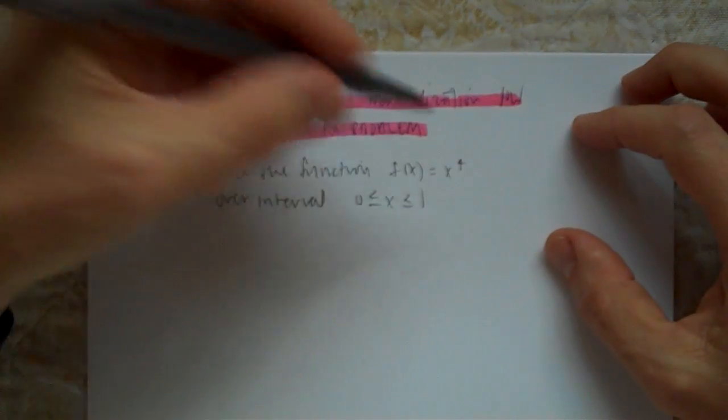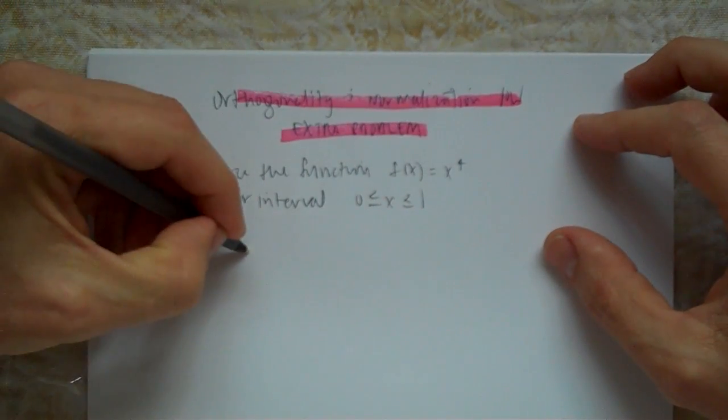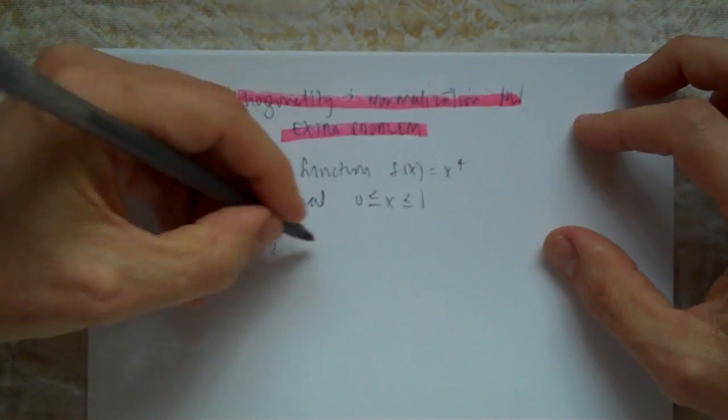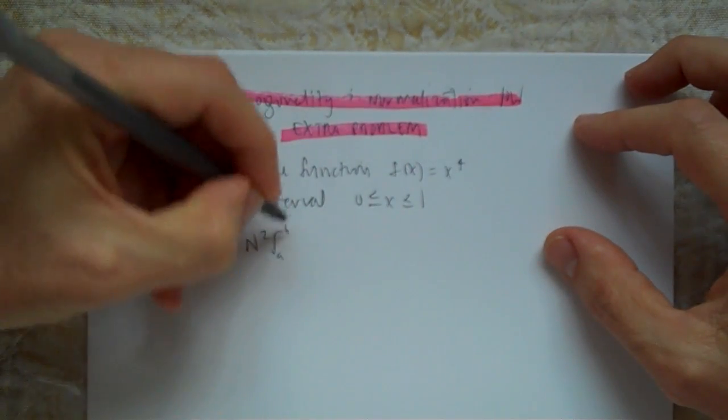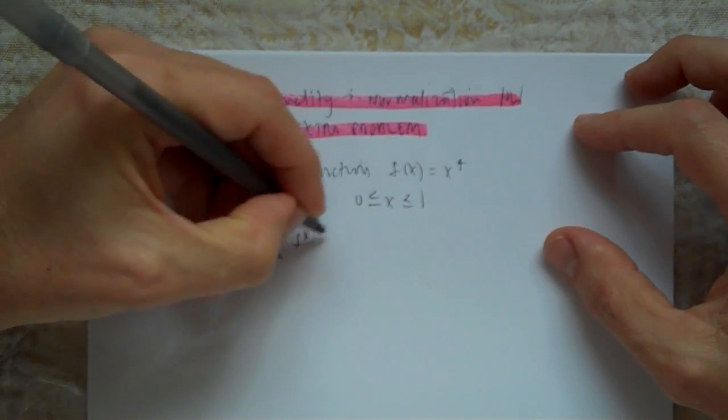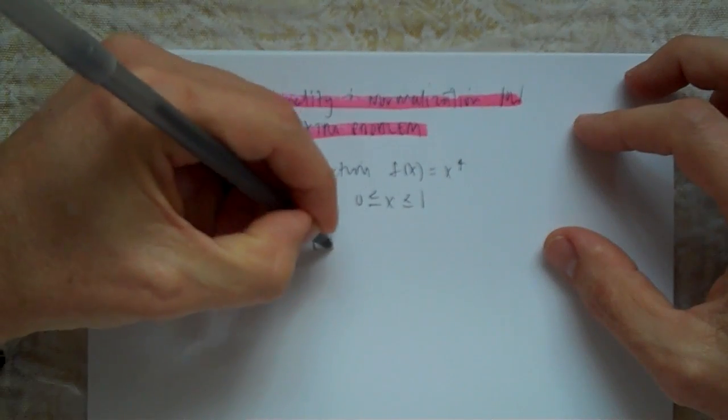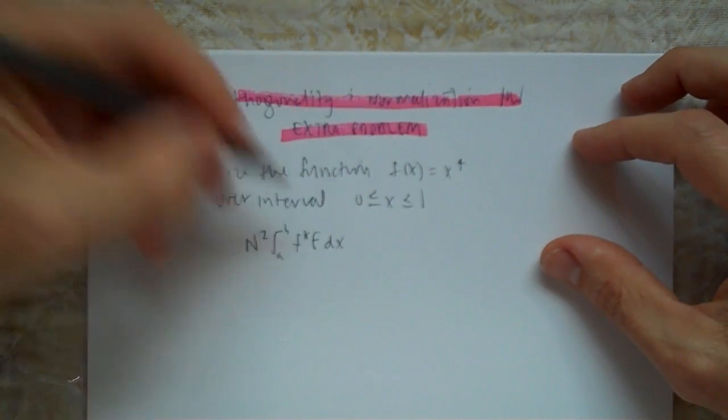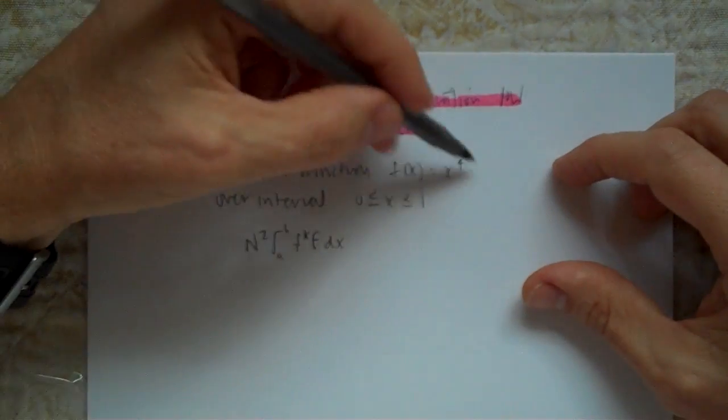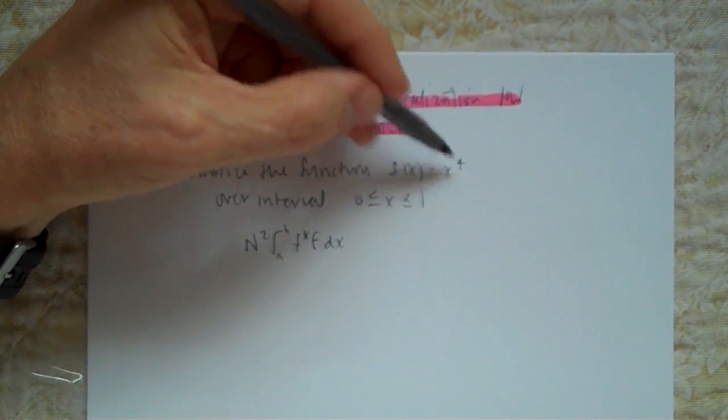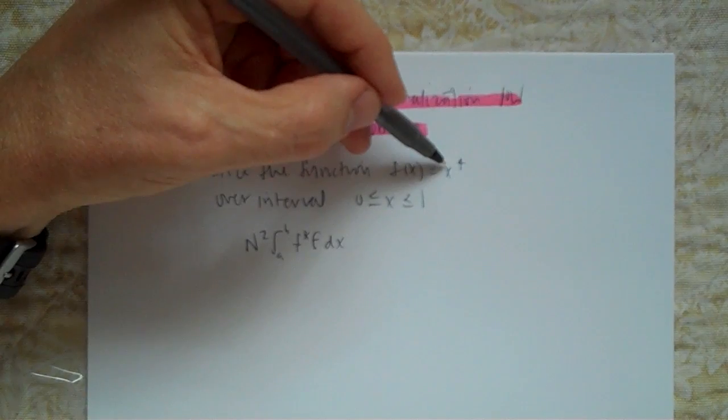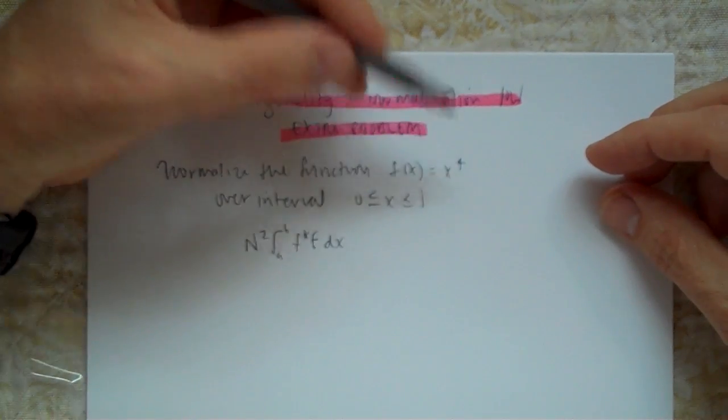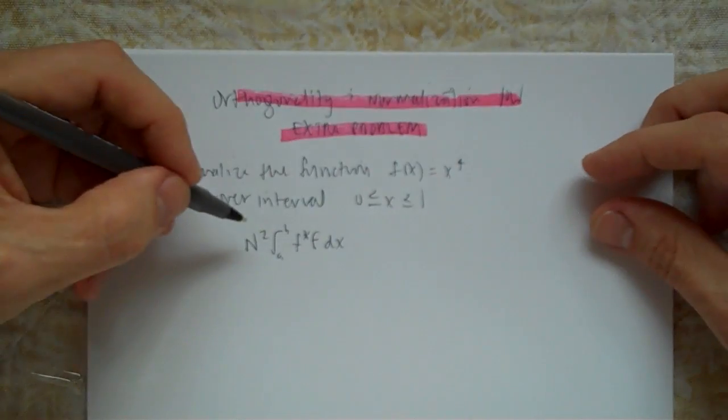So normalize the function f(x). We know that when we're normalizing a function, we're going to set it up like this: Here's our normalization factor n squared, integral from a to b of the function times the complex conjugate dx. This is the function of x and its complex conjugate. It turns out this function doesn't have a complex number, no i's in it, so we don't need to change it. We're simply going to do that one twice.